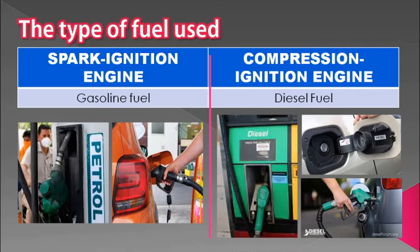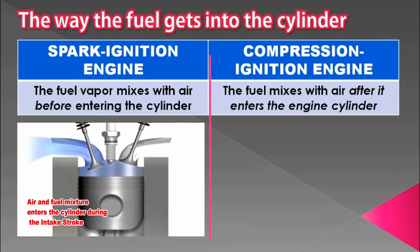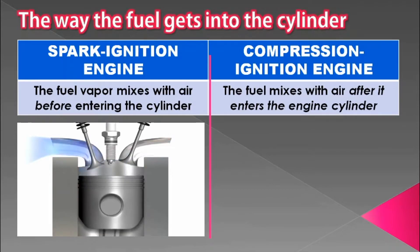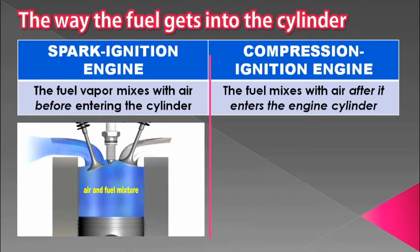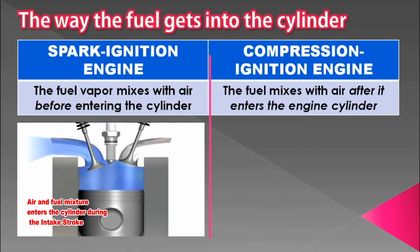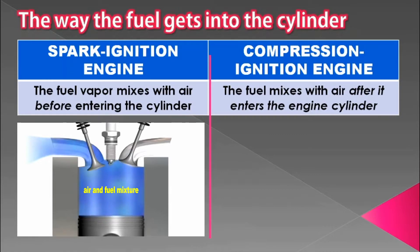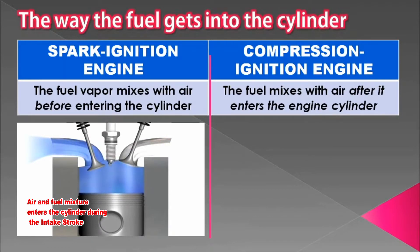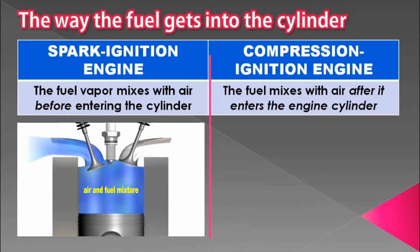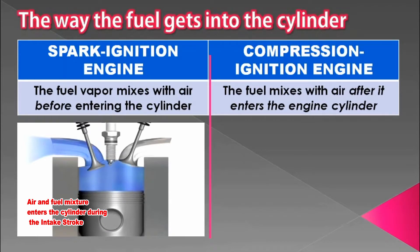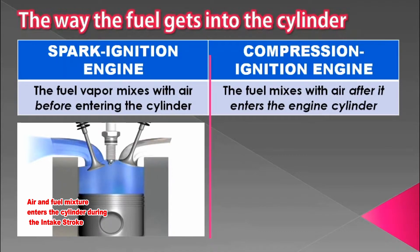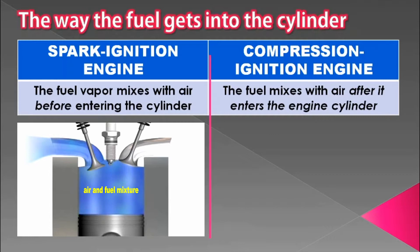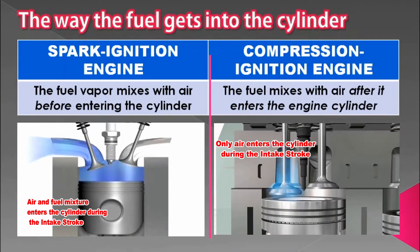The next difference is the way the fuel gets into the cylinder. In the spark ignition engine, the fuel vapor mixes with air before entering the cylinder. The device used to mix air and fuel is called the carburetor — it forms a combustible mixture. So during the intake stroke of a spark ignition engine, a mixture of air and fuel enters the cylinder.